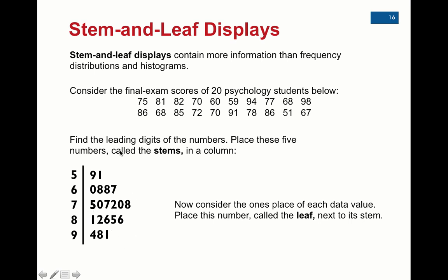From there, you take each individual data point and put them up. So this 5, 9 that you see right here is the score of 59. This 5, 1 is this score, 51. 6, 0 is this score of 60. And the benefit of a stem and leaf is that you get to see each individual data value.